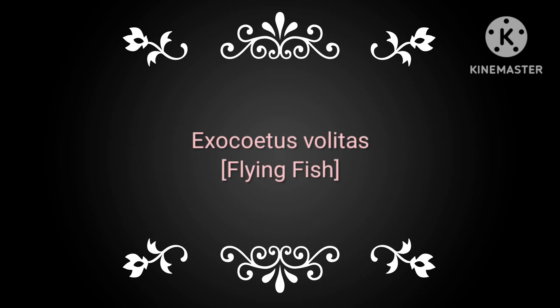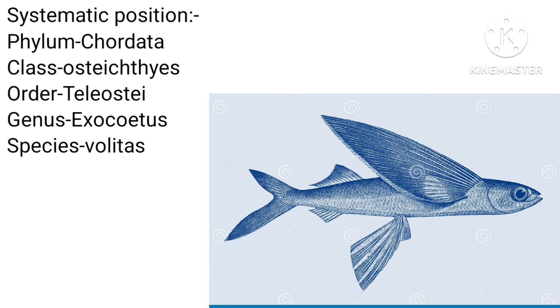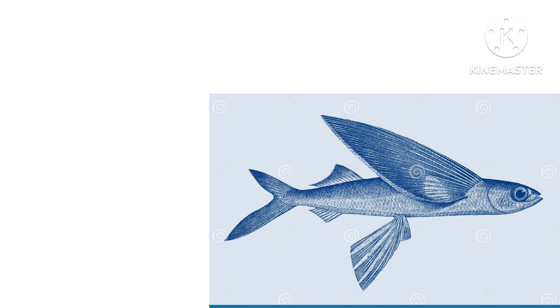Hello everyone, welcome back to my YouTube channel. In this video we will be discussing the topic Exocoetus, which is commonly called flying fish. Its systematic position is as follows — it is a bony fish but it is found in a marine habitat. Let's discuss the characteristics of this fish.